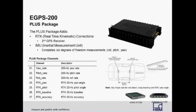The eGPS 200 plus package provides all the channels of the base model, plus IMU (inertial measurement unit) and RTK (real-time kinematic) measurements. The IMU option improves acceleration accuracy and completes the six degrees of freedom measurement by adding axis rotation: roll, pitch, and yaw. The real-time kinematic option uses readings from two GPS antennas to output high-accuracy yaw, pitch, and slip angle measurements. The eGPS 200 directly measures yaw and pitch at any time, while slip angle calculations require the vehicle to be in motion. For more information, visit www.hbm.com to watch a dedicated webinar on the eGPS 200.